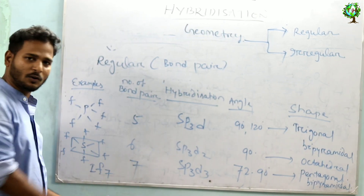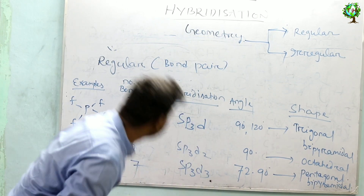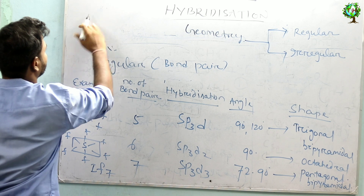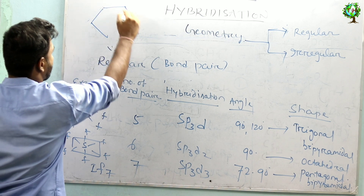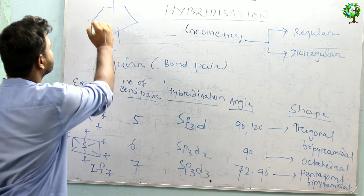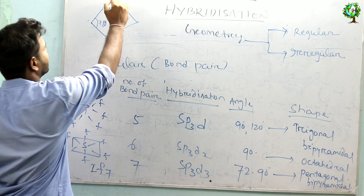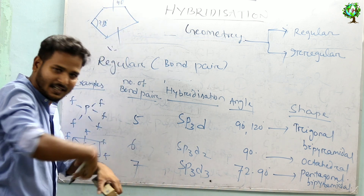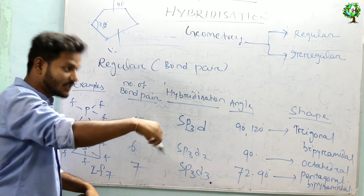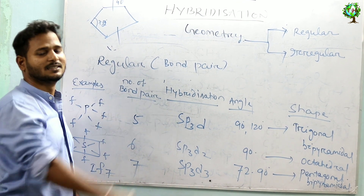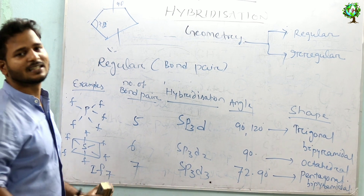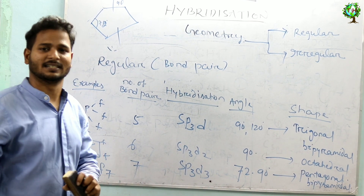When there are seven bond pairs, the structure is pentagonal bipyramidal. The equatorial angles are 72 degrees and the axial positions have 90 degree angles. So these are the regular predicted geometries.